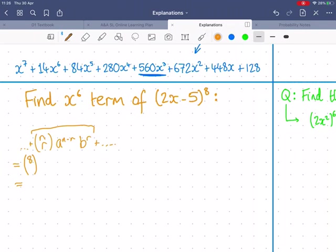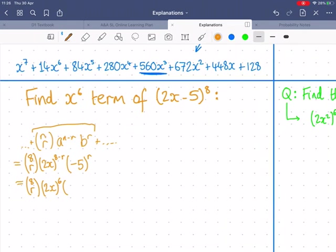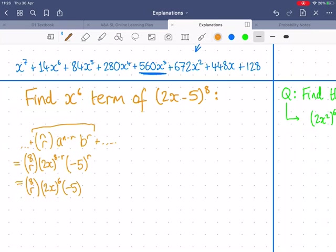Similar style of question. I'm going to use the general term of the formula again and start filling in what I know. I know that n is 8. I know that a is 2x. I know that b is minus 5. That's important. You could easily miss that. Now again, I'm just going to choose the power of x to be, well, in this case, 6.